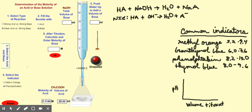How acid-base titrations differ from redox titrations is that you're not transferring electrons — you're transferring protons. You have a base and an acid present, and the acid donates a proton to the base. In order to get a color change here, we have to use something called an indicator. An indicator is basically just a weak acid, and when it donates its proton, it changes color.